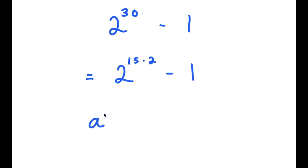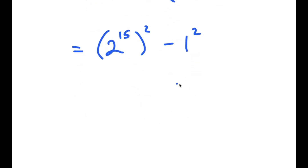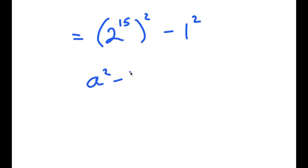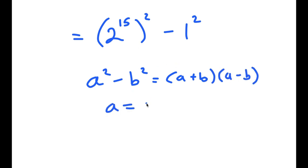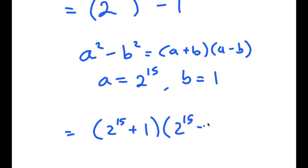Now if I have something in the form a to the power of m times n, this is equal to a to the power of m to the power of n. So 2 to the power of 15 times 2 is the same thing as 2 to the power of 15, to the power of 2. And negative 1 is the same thing as negative 1 squared. Now if I have something in the form a squared minus b squared, this is equal to a plus b times a minus b. So in this case, a is 2 to the power of 15 and b is 1. So now I have 2 to the power of 15 plus 1, times 2 to the power of 15 minus 1.